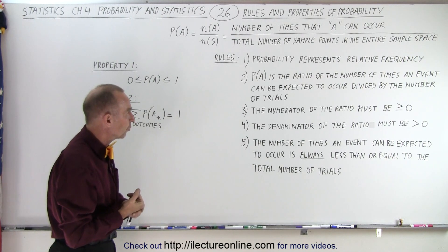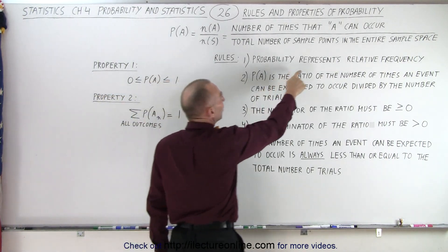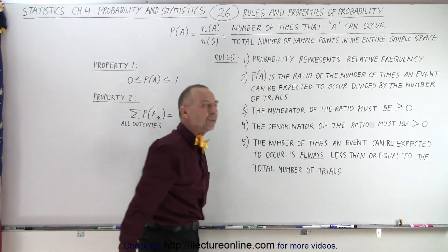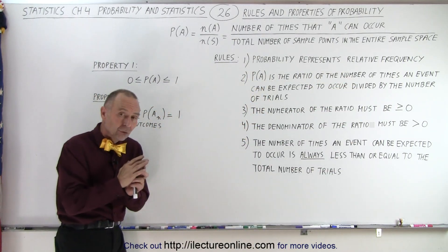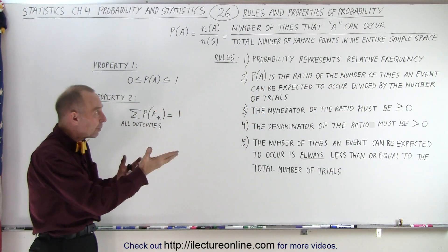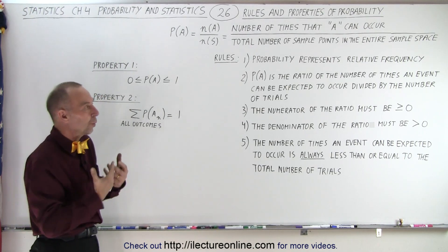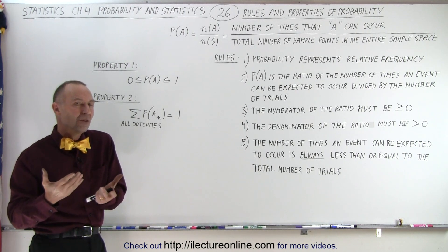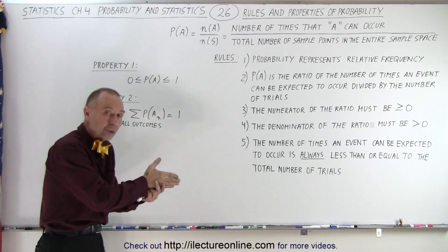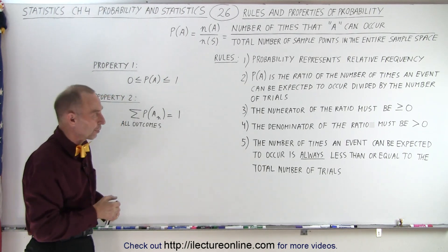The probability represents a relative frequency, and so that ties into what we've seen before, that relative frequency and probability are kind of one and the same thing. It represents the relative frequency. Out of 100 attempts, how many do we expect will be in category A or category B, and so forth.